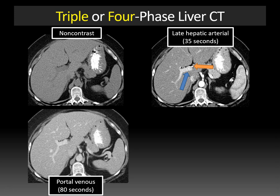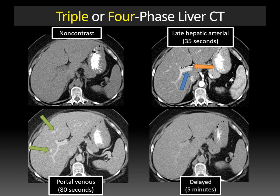After that, we have the portal venous phase, which occurs at about 75 to 80 seconds after contrast injection. You'll still see portal vein enhancement, but we'll also start to see hepatic vein enhancement, and the parenchyma demonstrates more robust enhancement. Finally, we have the delayed or equilibrium phase, which usually starts around 4 to 5 minutes and can continue to 10 minutes, at which point contrast starts to leak out of the liver.